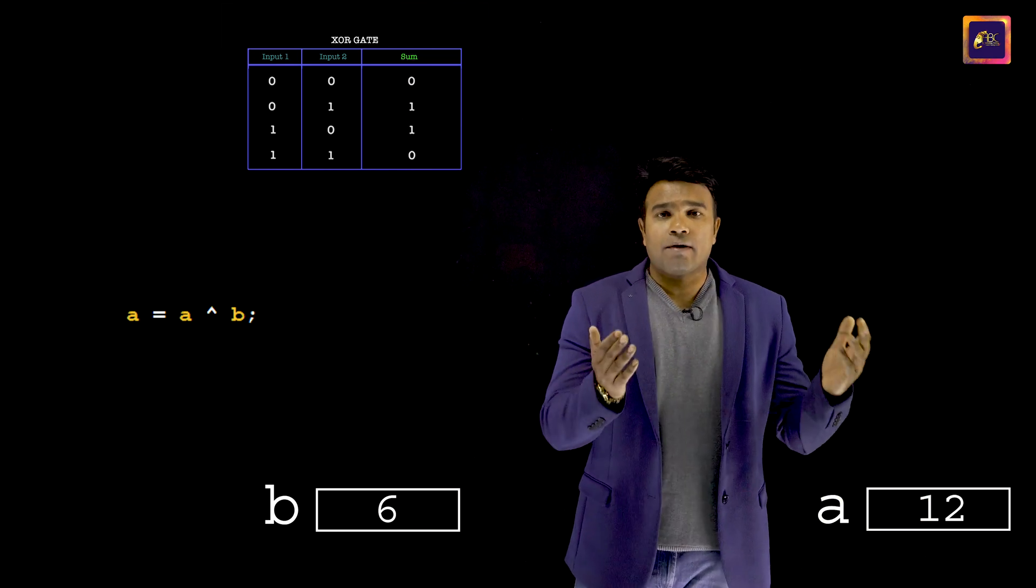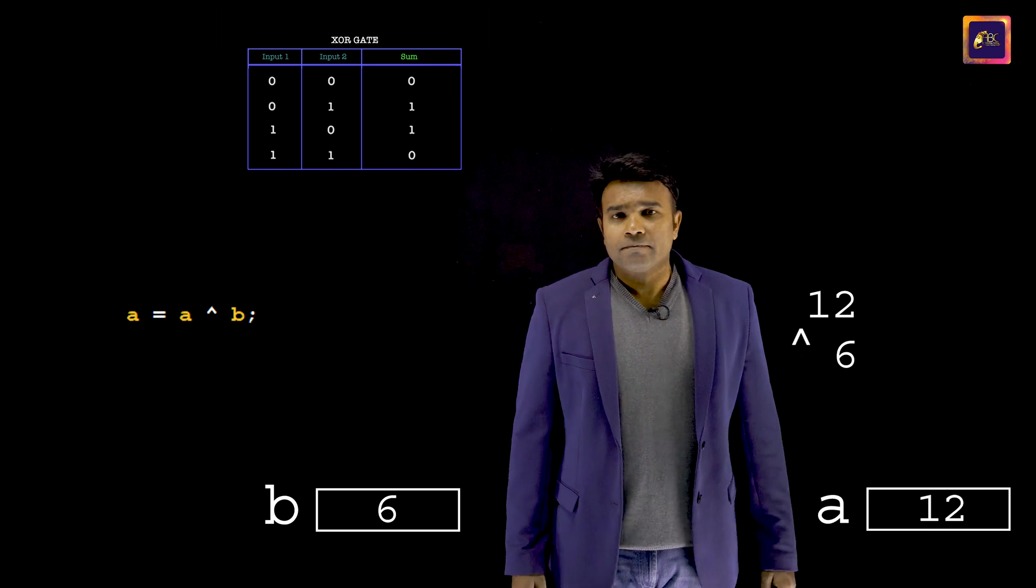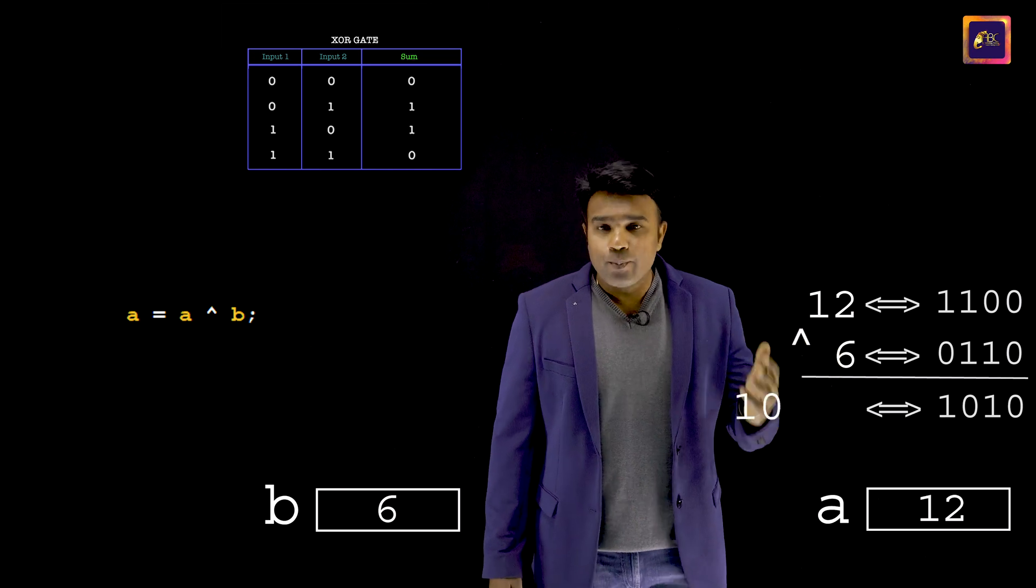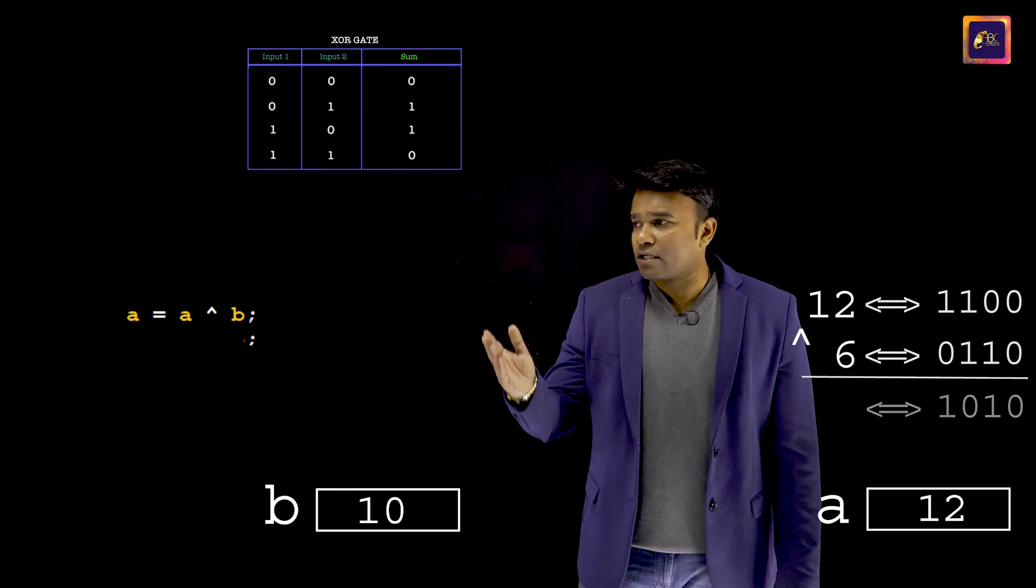Next, I again XOR A and B. And the result of XOR, this time I am going to place it in B. That is the code.